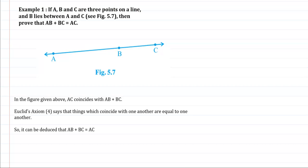So this is based on Euclid's fourth axiom, which says that things which coincide with one another are equal to one another.